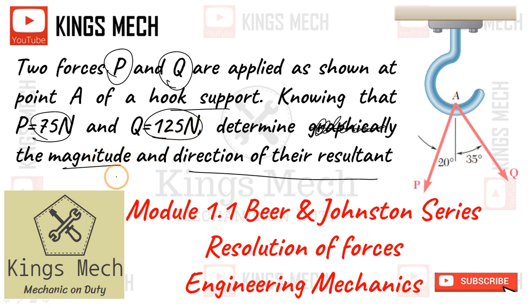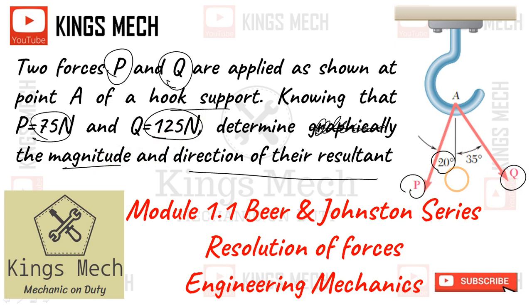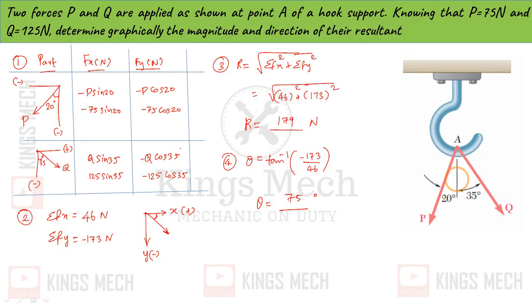This is my P inclined at 20 degrees, and this is my Q inclined at 35 degrees. So, how will I resolve it?